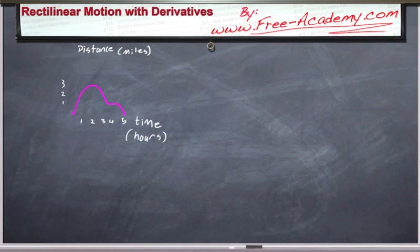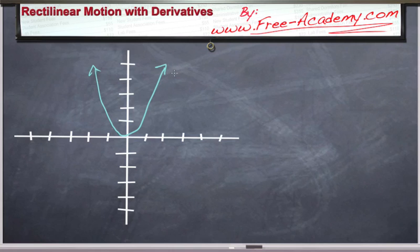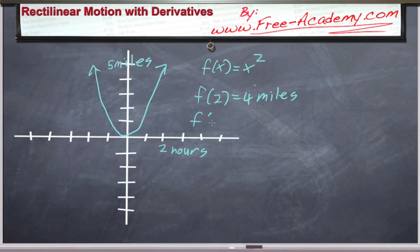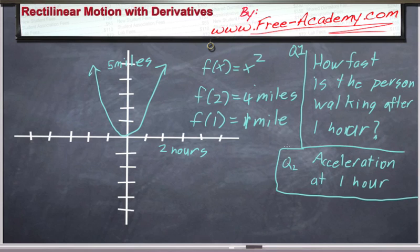All right, enough with stuff like this. Let's get into a really quick example. Let's say that we have a parabola. Let's say the distance that somebody is walking is given by the equation x squared. So after 2 hours, the person has walked 4 miles. After 1 hour, the person has walked 1 mile. So let's find out how fast the person is going after 1 hour. And also, let's figure out how much the person is accelerating after 1 hour. So again, we know that this is related through our derivative.